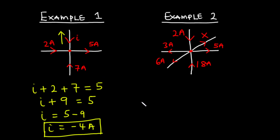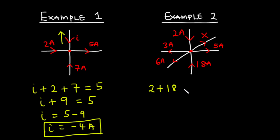Now let's move ahead and solve example 2. For example 2, we have 2 amperes entering the junction, 3 amperes leaving the junction, 6 amperes leaving the junction, 18 amperes entering the junction, 5 leaving, and x also leaving. For the sum of currents entering the junction, we have 2 amperes plus 18, and that's going to be equal to the sum of currents leaving the junction. So we have x leaving the junction.